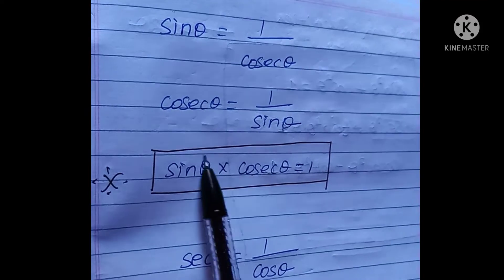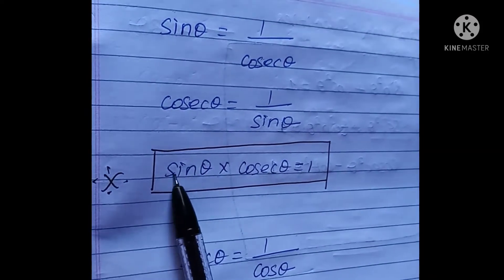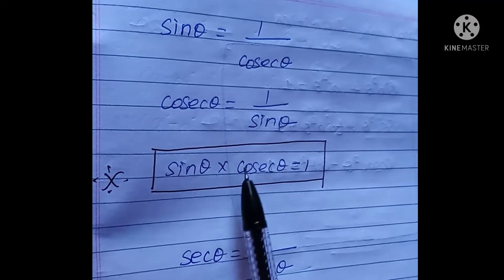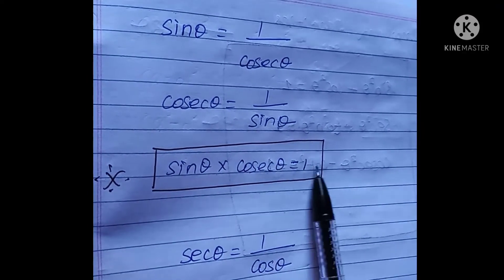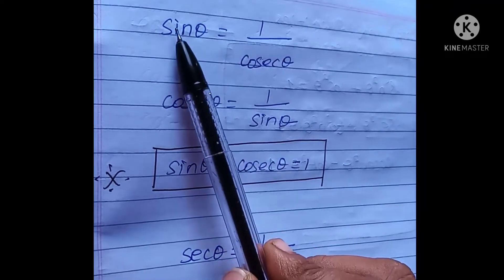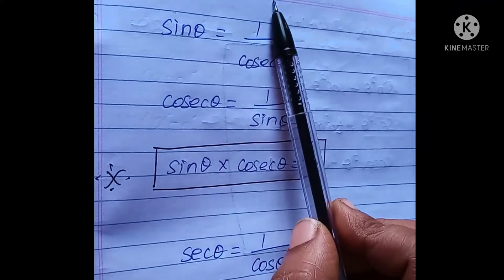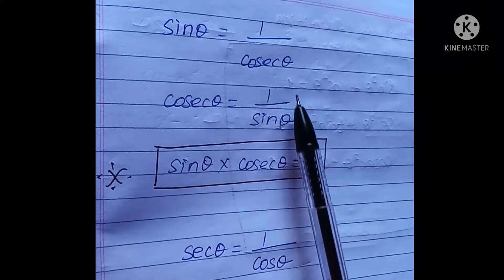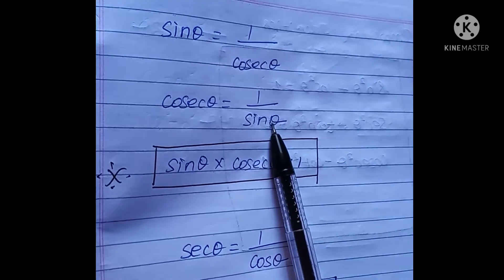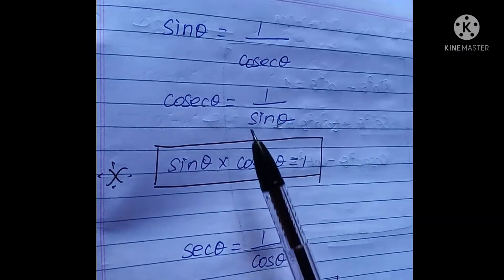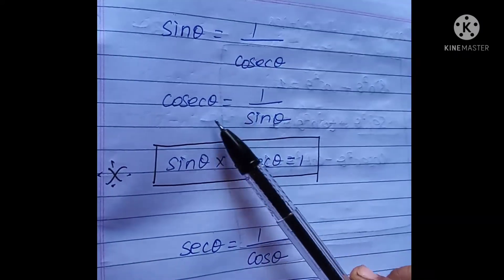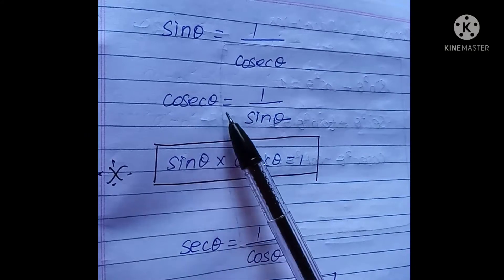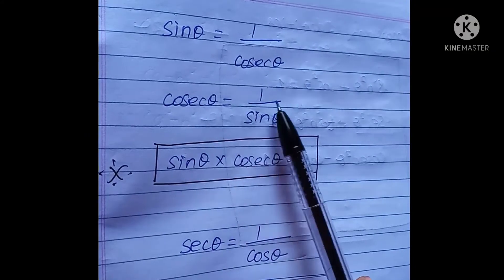If we know sinθ, sinθ is equal to 1 by cosecθ. cosθ is equal to 1 by secθ. So sinθ into cosecθ equal to 1.